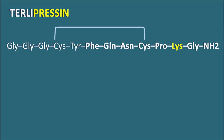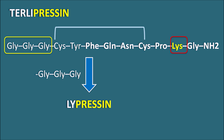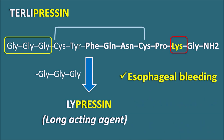The second synthetic vasopressin analog is terlipressin. At the eighth position, lysine is present, so it is a lypressin. It is not an active drug — it is a prodrug which has three glycine amino acids on the C-terminal. When this glycine amino acid sequence is removed from terlipressin, it gives lypressin as the active drug. Terlipressin is a long-acting drug and has more vasoconstrictory effects compared to its anti-diuretic activities. That is why this drug is used in the treatment of esophageal bleeding, where it controls bleeding by vasoconstriction.